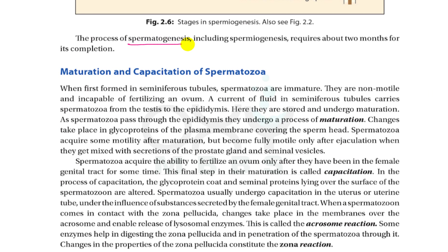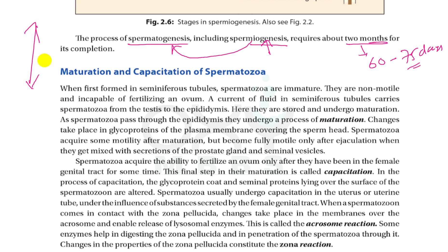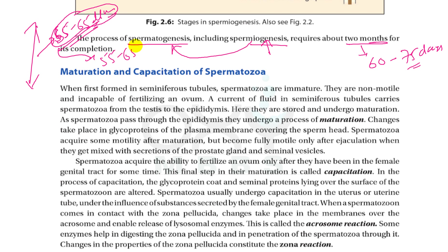The complete process of spermatogenesis, including spermiogenesis, requires approximately 60 to 75 days. The length of a spermatozoon is 55 to 65 micrometers. Formation of a mature male gamete from the spermatogonium takes 55 to 65 days on average, but can extend up to 75 days.